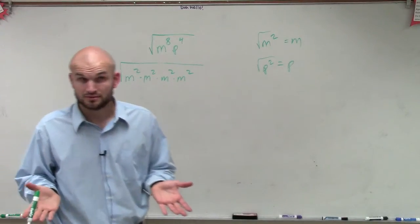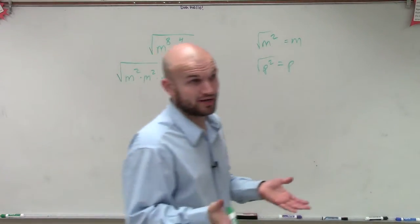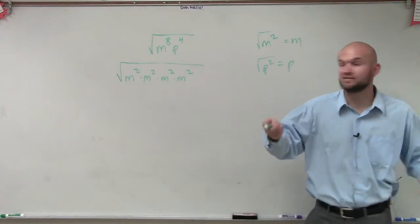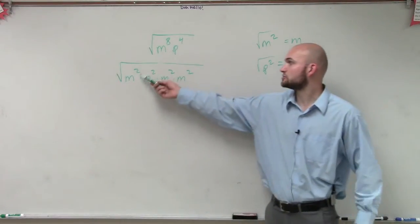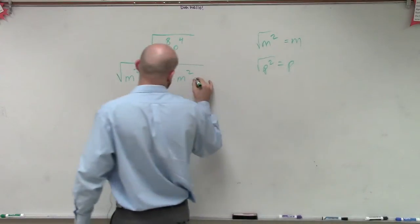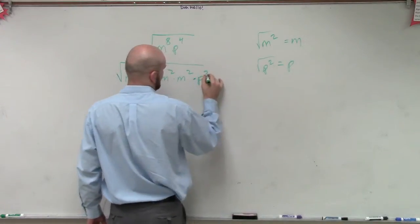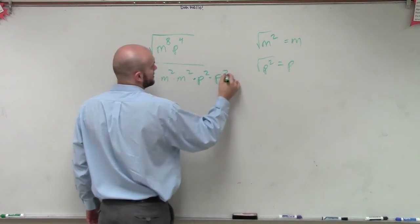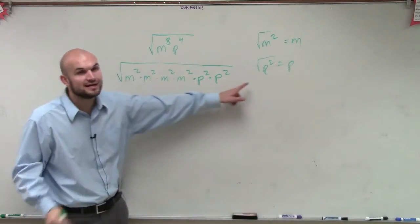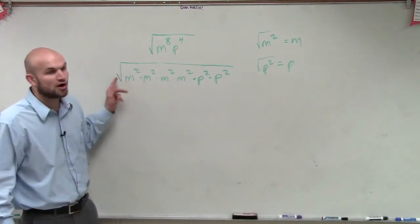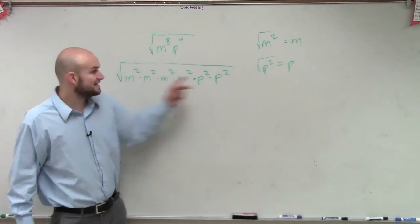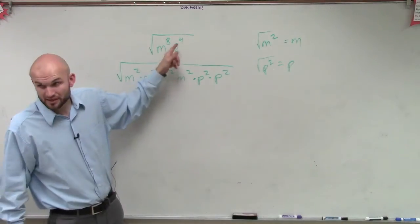Because remember, when you multiply variables with exponents, you add the exponents — so two, four, six, eight — times p squared times p squared. So now I can take the square root of all of these, and this is the exact same thing as before.